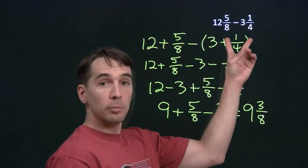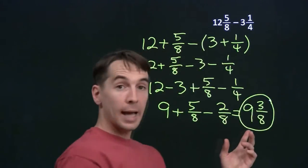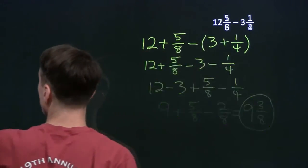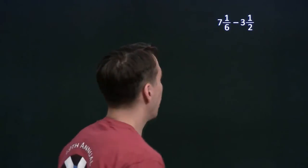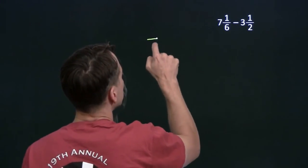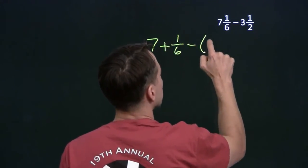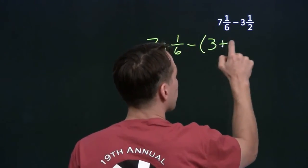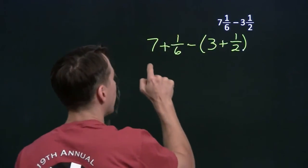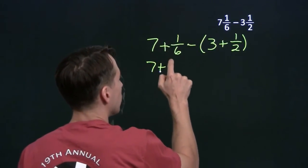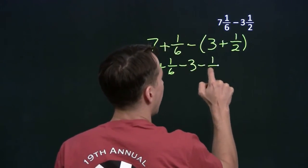Notice the original problem is in terms of mixed numbers, so we write our answer as a mixed number. And we're on to the next problem. We know how to handle this now — we just break our mixed numbers into integer parts and fractional parts. And once again, we remember these parentheses because we're subtracting the 3 and we're subtracting the half. So we distribute that out and we get minus 3 and minus a half.